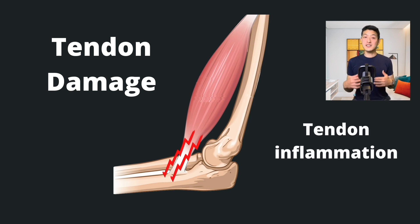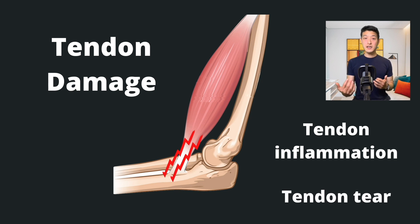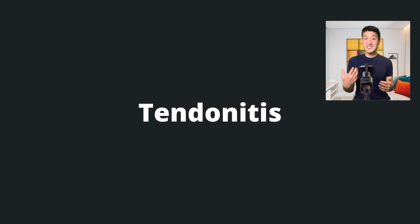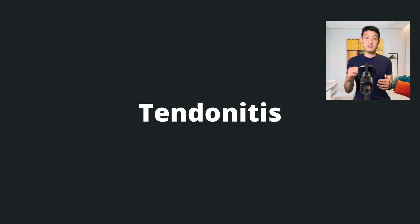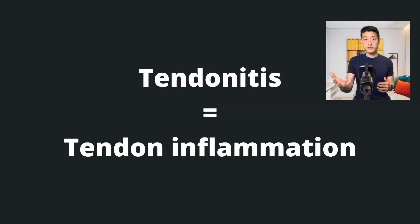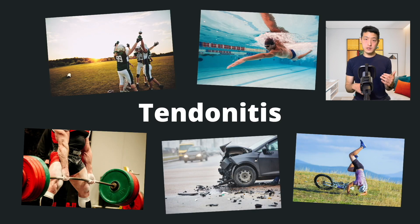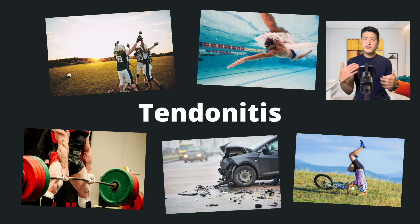This can cause tendon inflammation, and if severe, can result in a tendon tear. We call this type of injury tendinitis. Tendinitis describes tendon injuries that result from inflammation. These usually are from acute injuries — examples include sports, lifting heavy objects, or being involved in some kind of trauma.